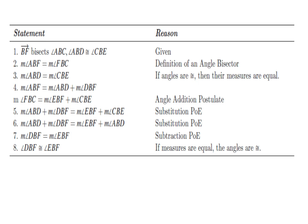Statement 5 sets the measure of angle ABF and the measure of angle FBC equal to each other to get: the measure of angle ABD plus the measure of angle DBF equals the measure of angle EBF plus the measure of angle CBE.